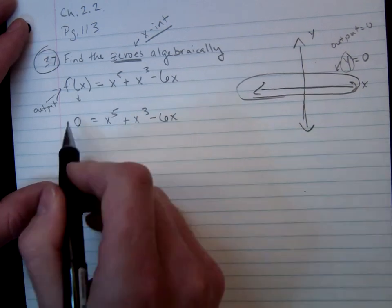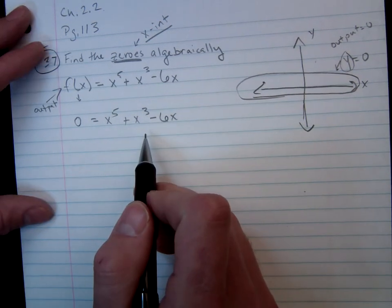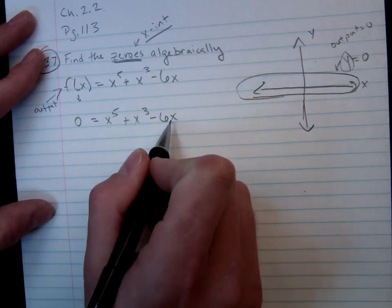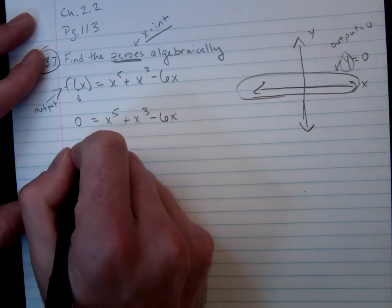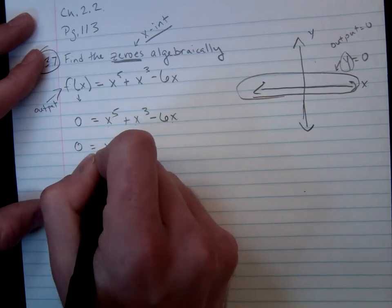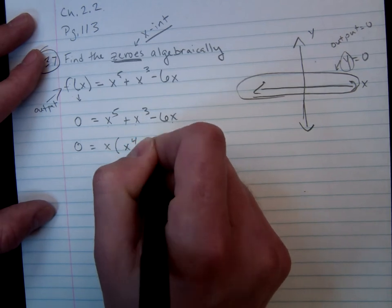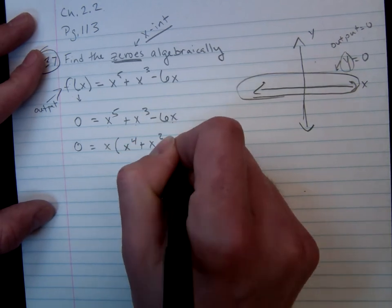So from there, you should see that this is the type of equation that you've seen many times before. The first step is always to look for a greatest common factor. I see that all of these possess at least one x, so I can factor an x out of this. So I get x times x to the fourth plus x squared minus 6.